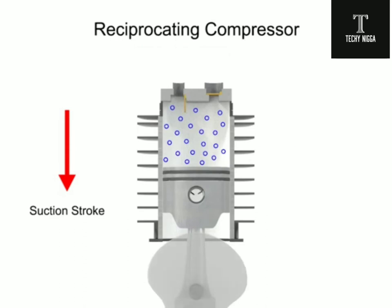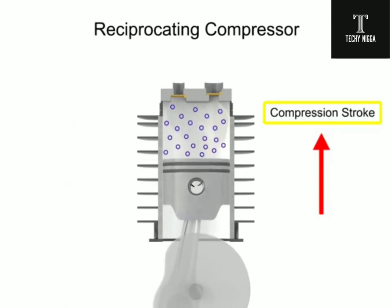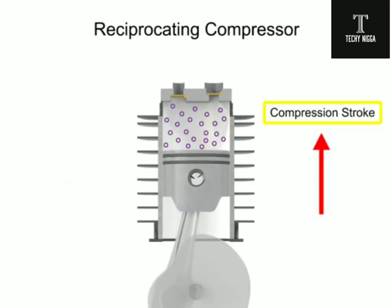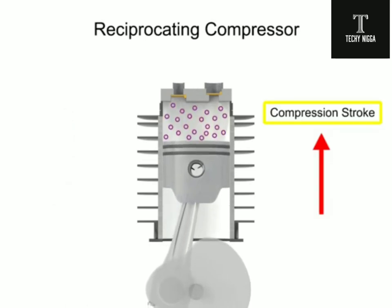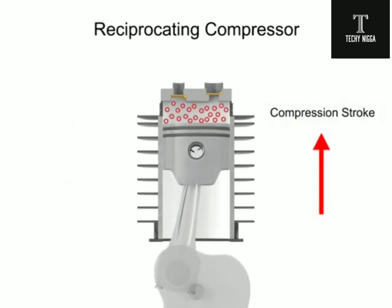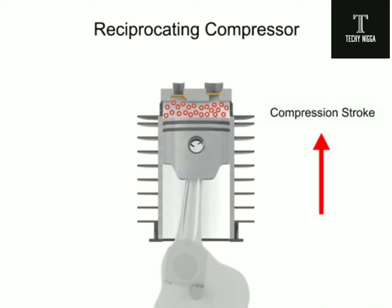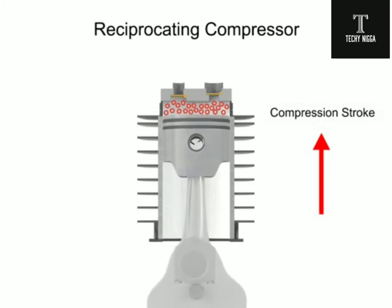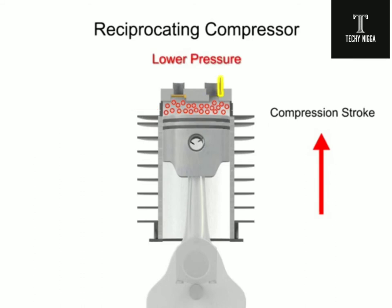As the piston begins its upward compression stroke, the volume within the cylinder decreases. The decrease in volume causes the pressure within the cylinder to increase. The increase in pressure opens the outlet valve and compressed air discharges from the cylinder.